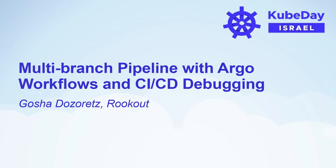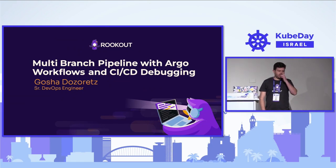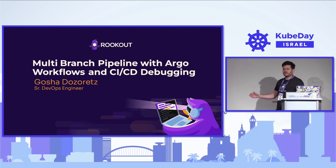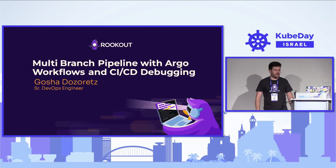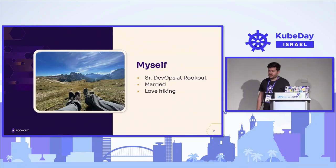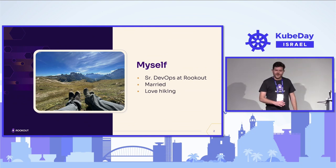Hello everyone. Thank you for joining me today. Today I will be speaking about how I implemented a multi-branch pipeline with Argo Workflows, how I debugged it, a small contribution that made it possible, and also an open source project that came out of it. A little bit about myself: my name is Gosha, I'm a senior DevOps engineer at Rookout, married and a huge fan of hiking.